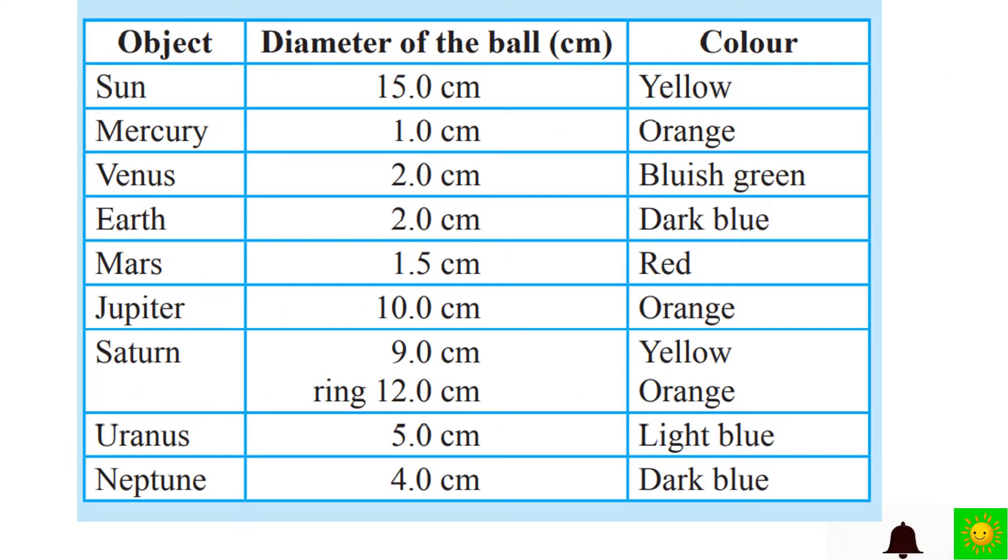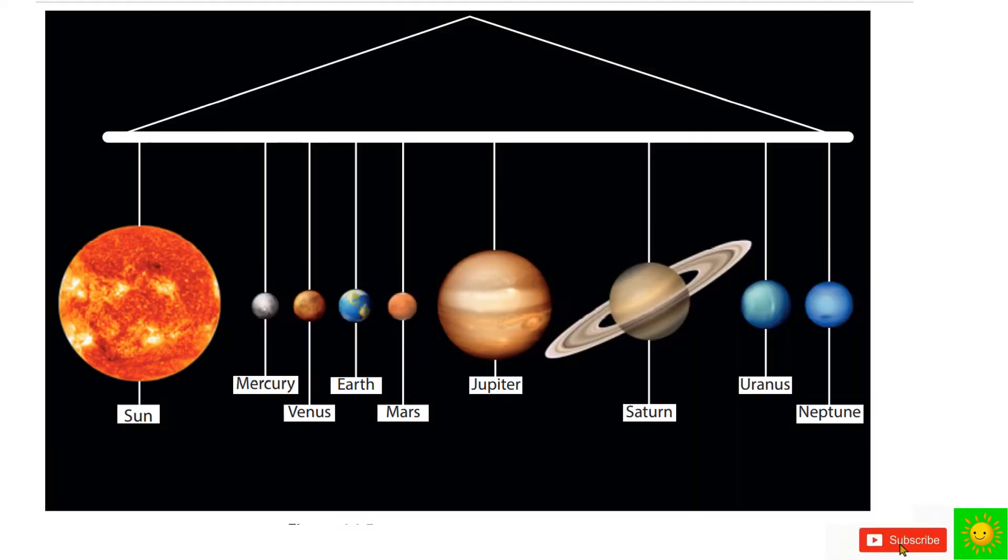Let's see what we have to do. Select styrofoam balls to sizes given below and paint them with colors indicated. Here you can see the diameter of the ball and the color for each object. Cut a strip of Saturn from the styrofoam sheet. When the paint is dry, fix the balls to wooden strip using glue. Paint the wooden strip black. Make the model as given in the figure. Write the names of the planets. Let's see here. This is what you have to make. Now you can compare the model which you have made with this given model.